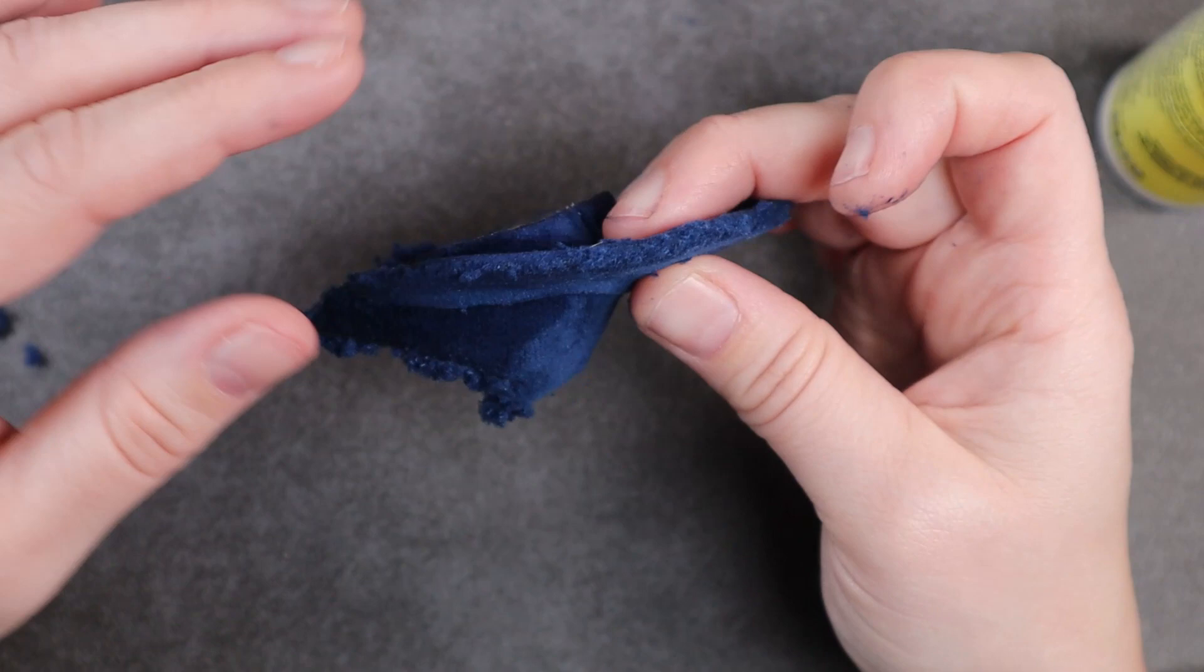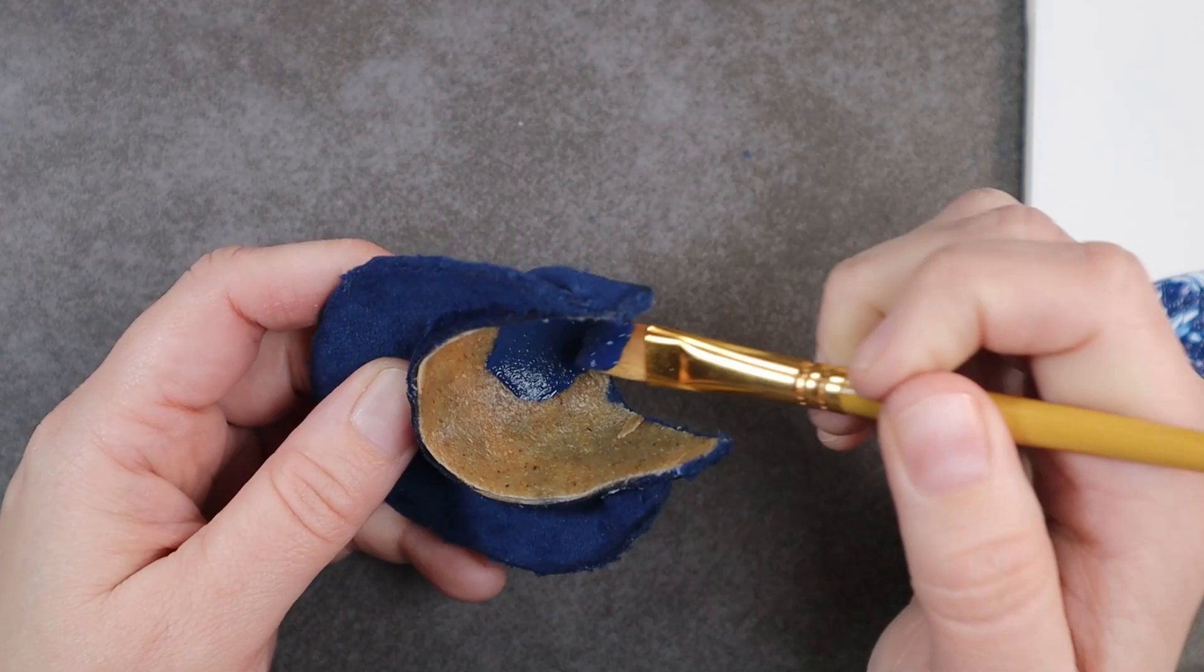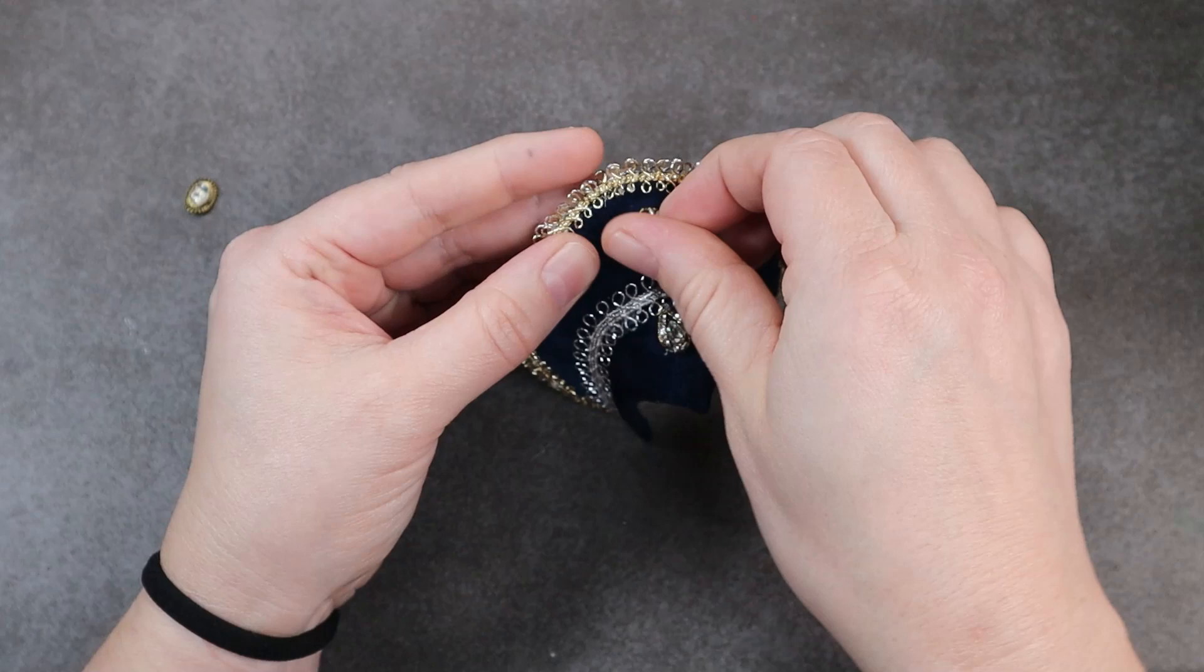For the underside of the headdress, I simply match up some blue paint and paint it. The final thing to do on the headdress is to embellish it, and I just use various fabric trims as well as some nail art gemstones.